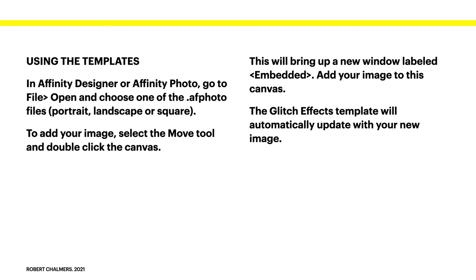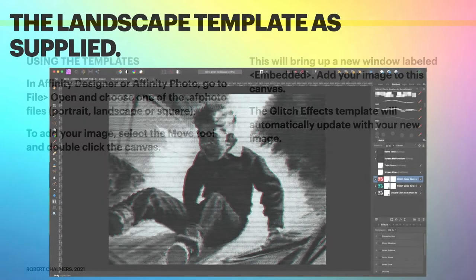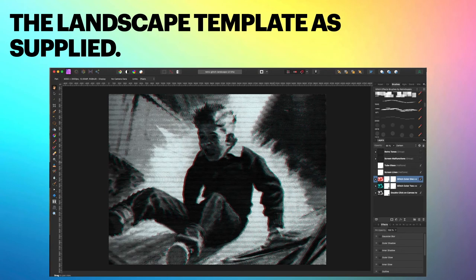To add your image, select the Move tool and double click the canvas. The Move tool is the arrow — the second one down on the left. Double click on the canvas and this will bring up a new window labeled Embedded. Add your image to this canvas and the Glitch effect template will automatically update with your new image. Remember, if you're working with this, always make a copy — don't work with your originals.